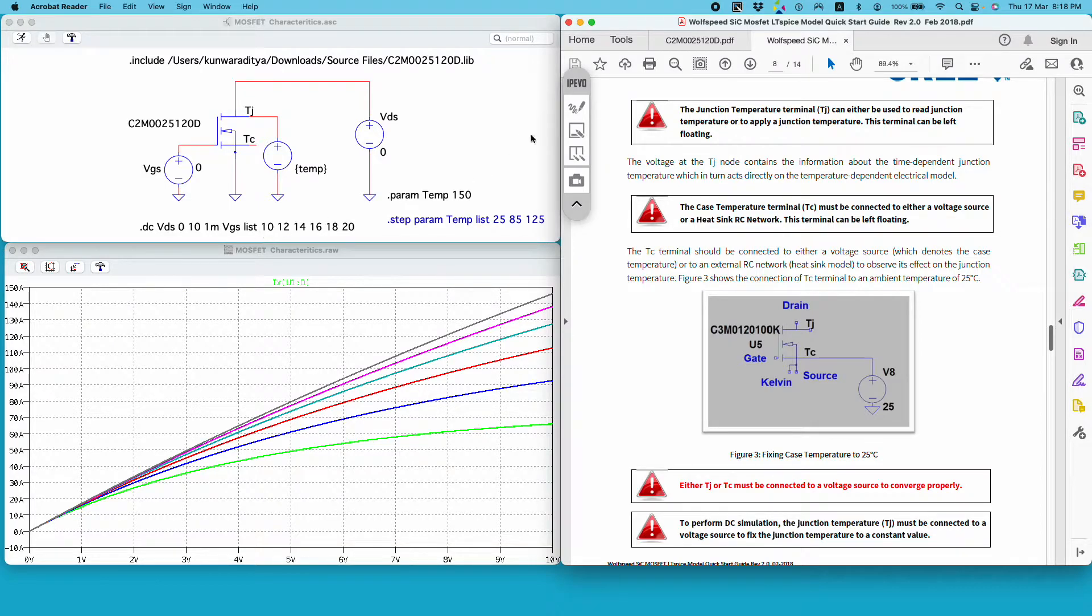Here I am performing a DC sweep and the instruction clearly says, to perform DC simulation junction temperature must be connected to a voltage source to fix the junction temperature to a constant value. So this is what I have done - I have connected the junction temperature to a voltage source.